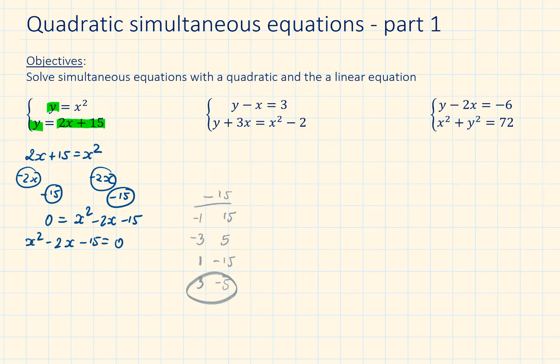So 3 times minus 5 is minus 15, and 3 plus minus 5 is minus 2. So we can factorize it now, giving us x plus 3 and x minus 5.